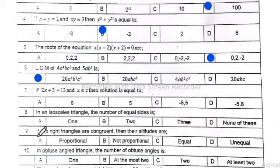Number 7: If |2x + 3| = 13 and x belongs to Z, then the solution is equal to -8 and 5. Option C is correct.